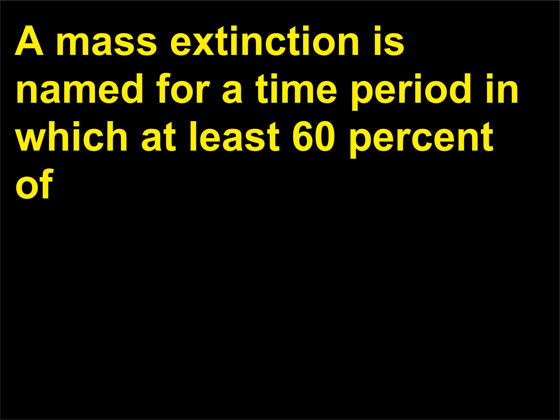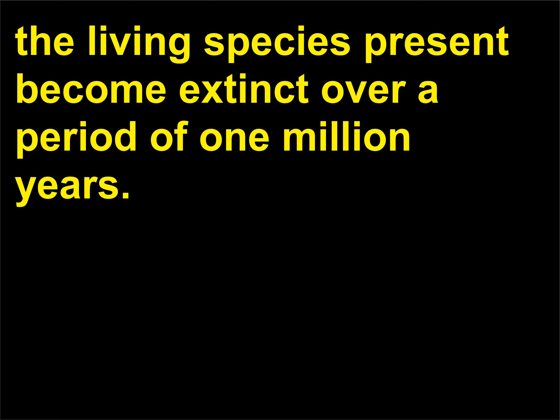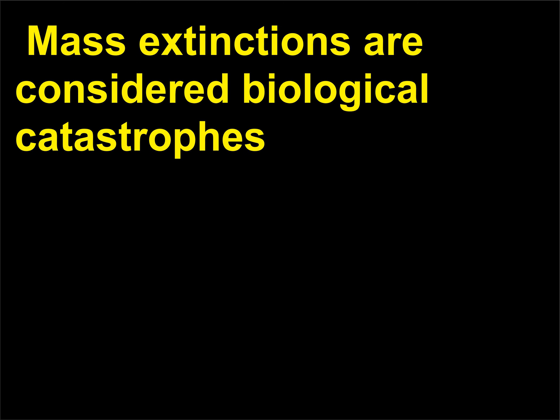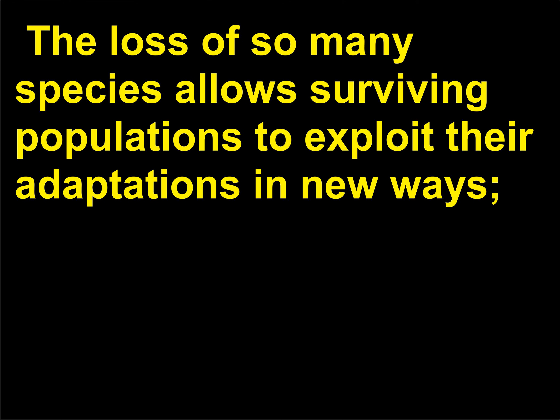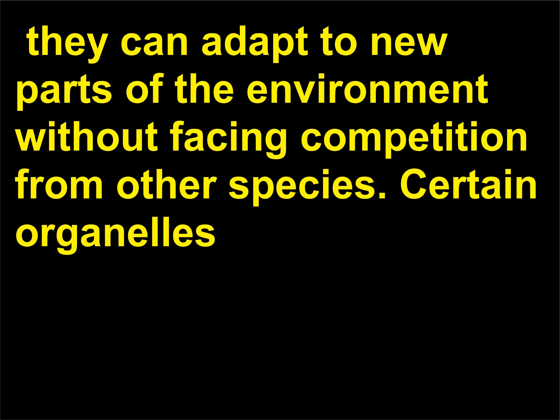A mass extinction is named for a time period in which at least 60% of the living species present become extinct over a period of one million years. Mass extinctions are considered biological catastrophes because of the relative speed and range of their effects. The loss of so many species allows surviving populations to exploit their adaptations in new ways, adapting to new parts of the environment without facing competition from other species.